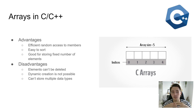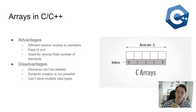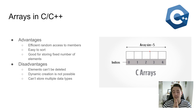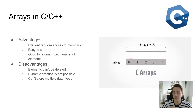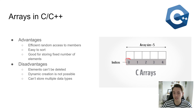First of all we're going to talk about arrays in C and C++ — the original arrays from C which we can also use in C++. On the picture over here to the right we can see an original C array that can store some elements where the data type is defined. It has indices starting at zero, and in this case the array has a size of 5, so it can store 5 elements.